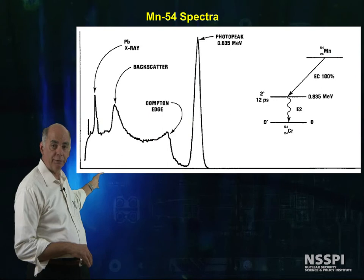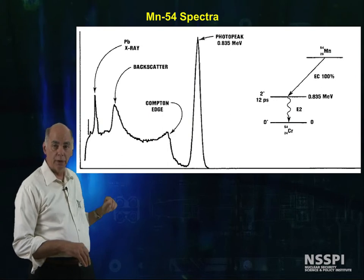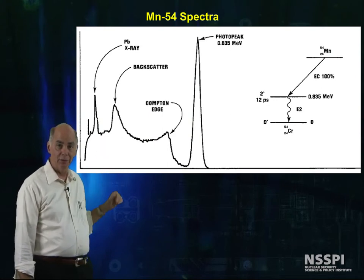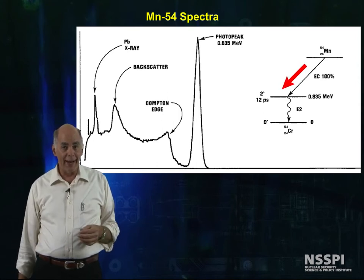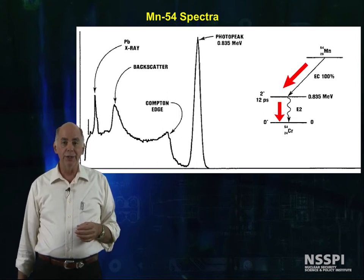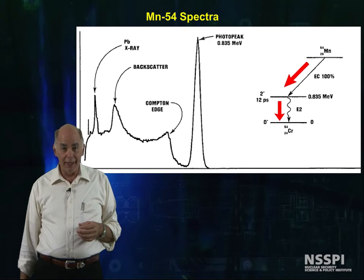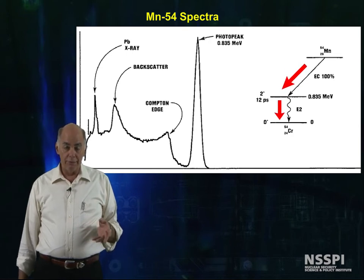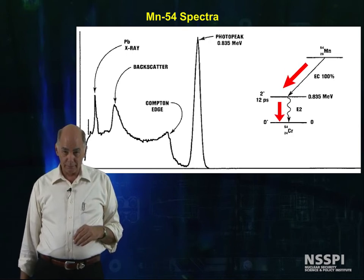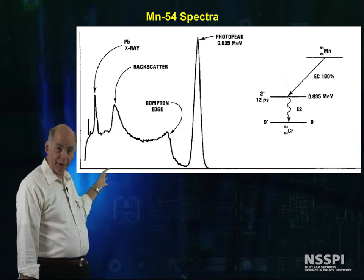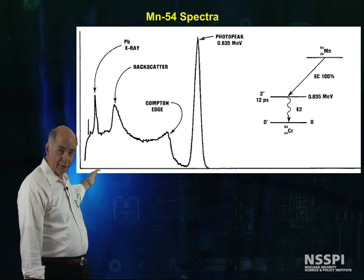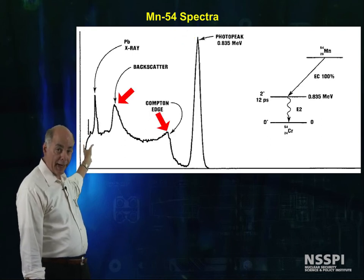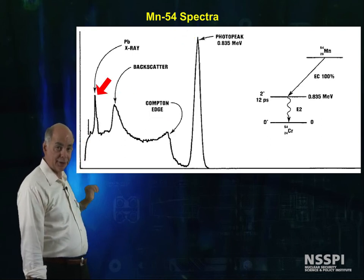Here's a manganese-54 spectrum. On the right-hand side, we see that manganese-54 decays by electron capture and emits a single 835 keV gamma ray from chromium-54 metastable. Looking at the spectra, we see the photopeak at 835 keV. We can identify the Compton edge, a backscatter peak, and lead X-rays.